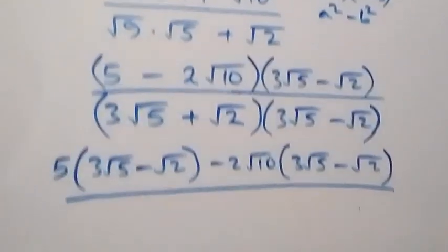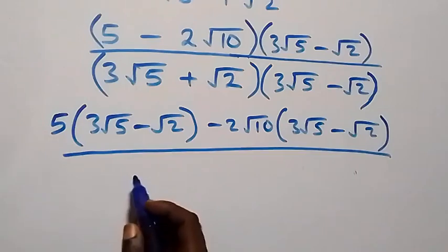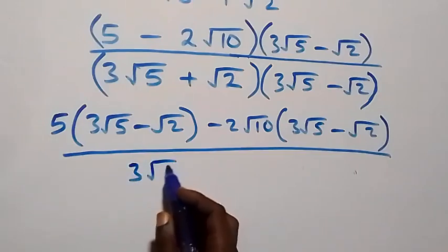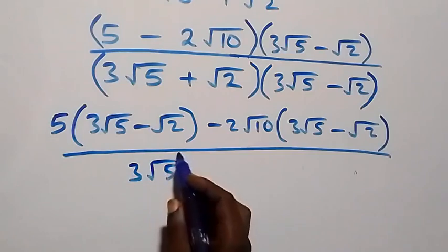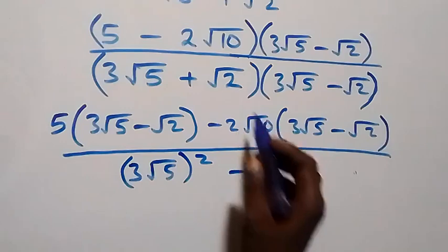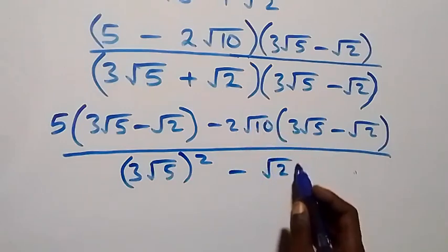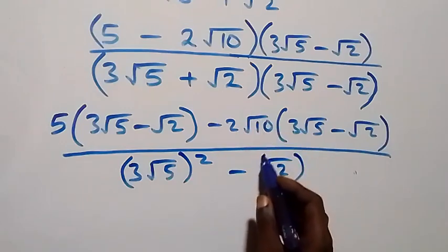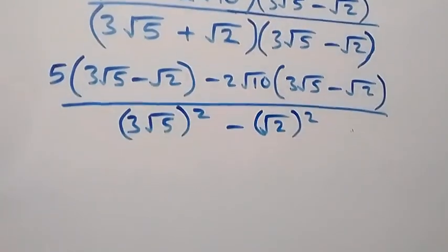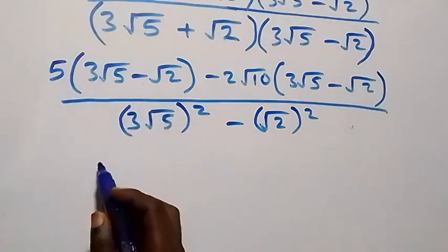Here, three root five serves as a, so we have (three root five) squared, then minus root two serving as b, so we have (root two) squared. Now simplifying further, five multiplied through gives us the next step.